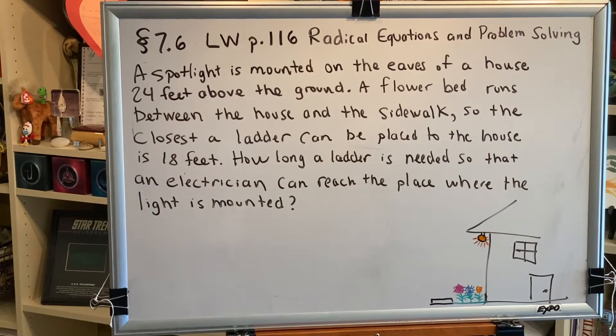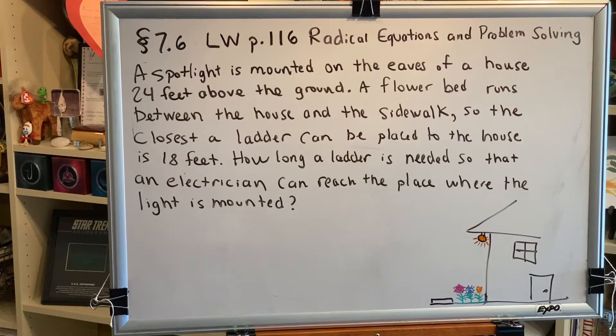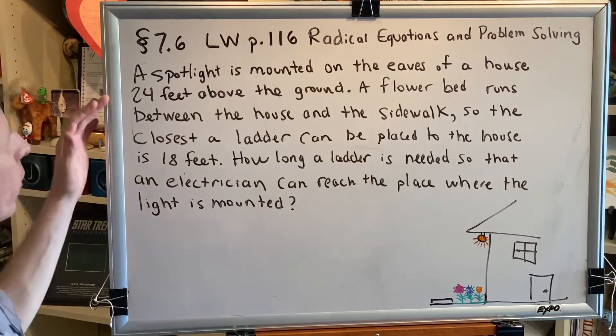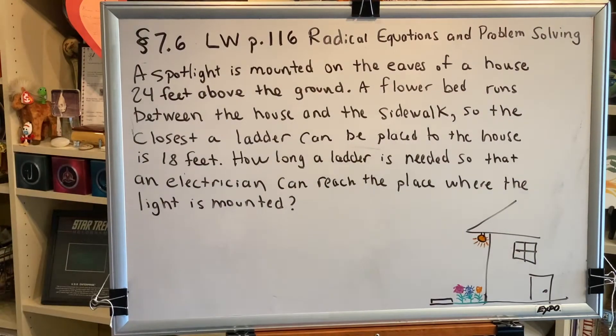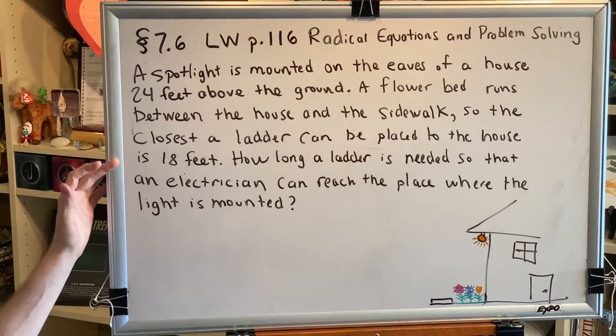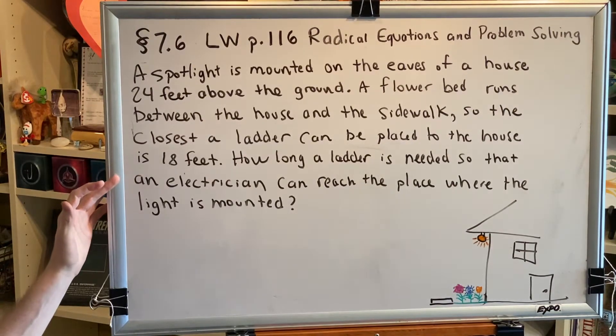We continue learning workbook page 116 with the following problem: A spotlight is mounted on the eaves of a house 24 feet above the ground. A flower bed runs between the house and the sidewalk, so the closest a ladder can be placed to the house is 18 feet. How long a ladder is needed so that an electrician can reach the place where the light is mounted?